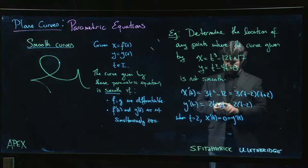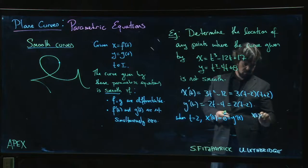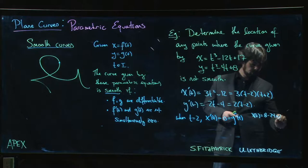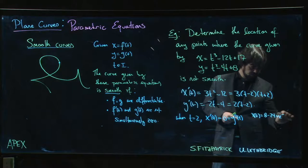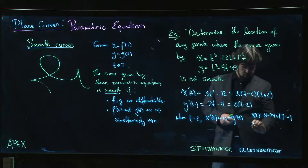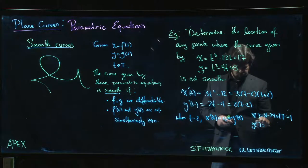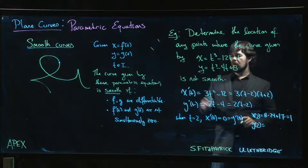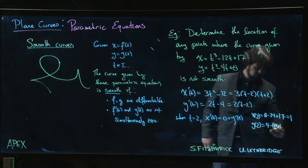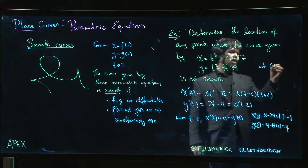We should go back and figure out what the point on the curve is. We go back to the original parametric equations. X of 2 is going to be 8 minus 24 plus 17, that's going to come out to be 1. Y of 2, we get 4 minus 8 plus 8, we get 4.